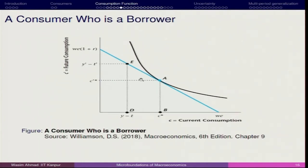Now here we have a consumer who is a borrower. If the consumer has an income at the endowment point E — here it is Y′−T* — this is his future consumption and here is his current income. He is consuming more than his income; for example, if income is 100 rupees but consumption is 200 rupees, the extra 100 rupees is covered here, at Y−T and C*. At point A, we infer that the consumer is a borrower: he is borrowing in the current period and has to pay back in the future period. This is the payback period and this is the borrowing period.